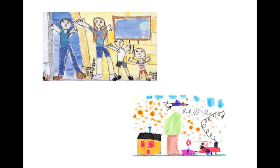Objects are often placed on the ground, usually at the bottom of the paper, instead of floating in space on the paper. Objects of greater importance to the child are sometimes drawn larger than objects of lesser importance at this stage.